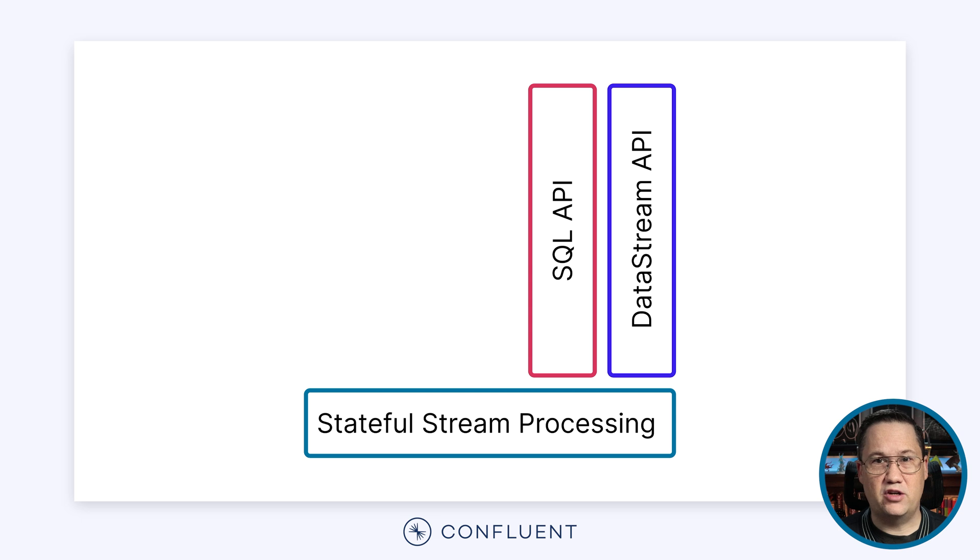The SQL API uses standard SQL to write queries against data streams by treating them like tables. This helps simplify some of the complexities of stream processing. Although SQL is familiar, it's a declarative language and lacks features found in imperative languages such as Java or Python. Developers often reach for these languages because they want features like auto-completion, automated testing, and complex coding structures like loops, functions, and recursion, or a robust type system.